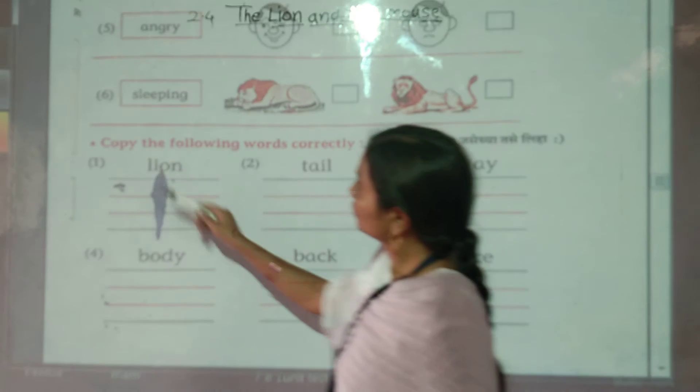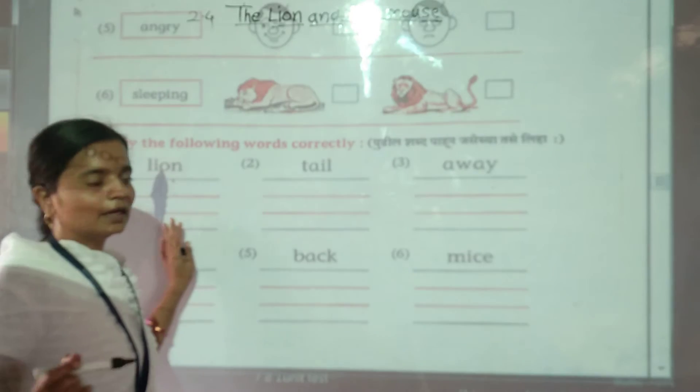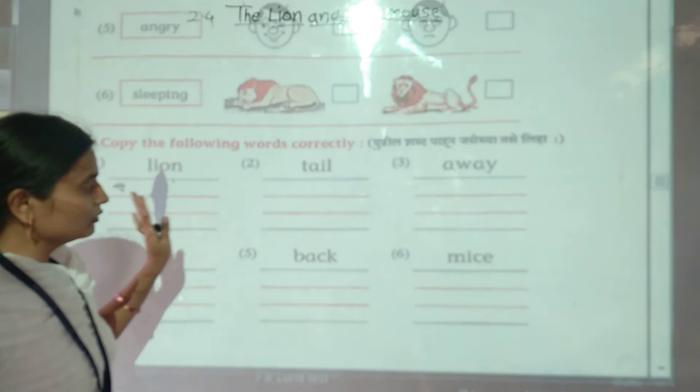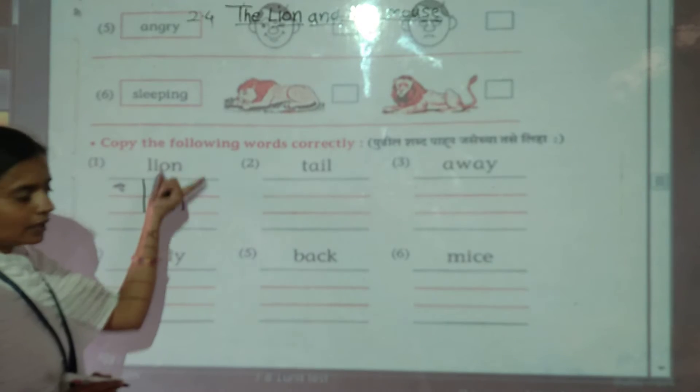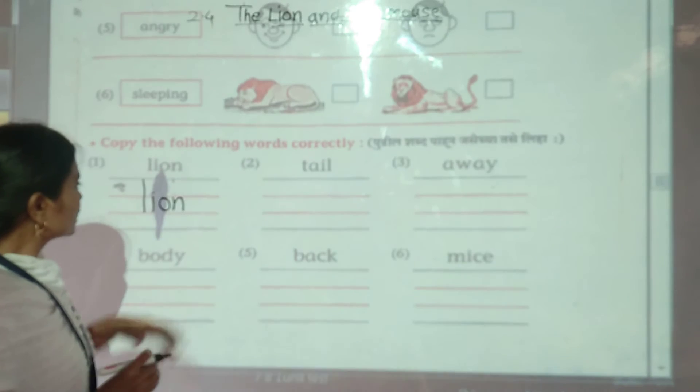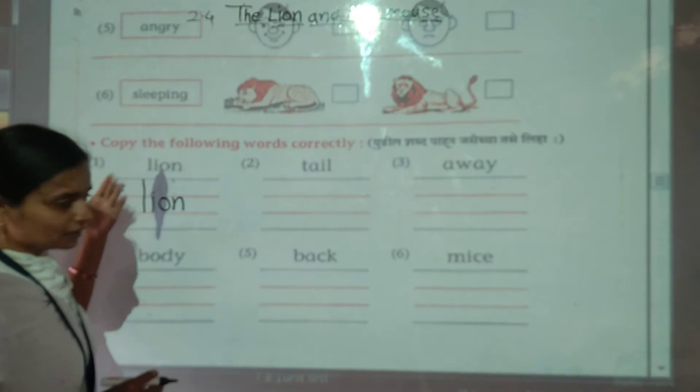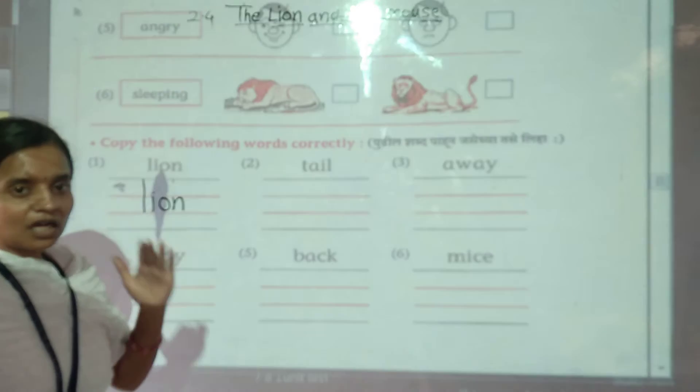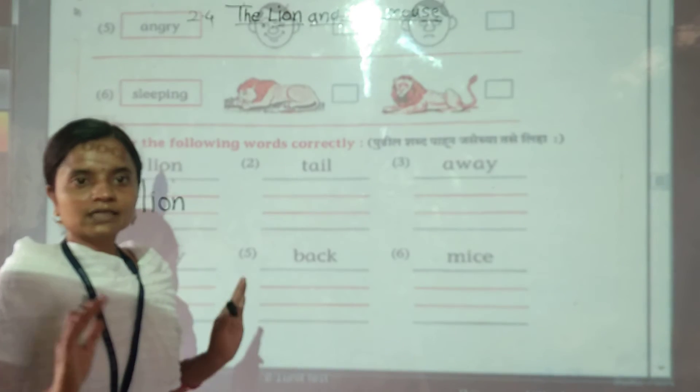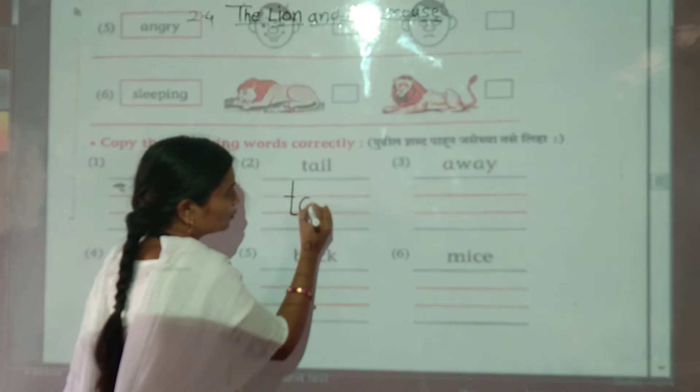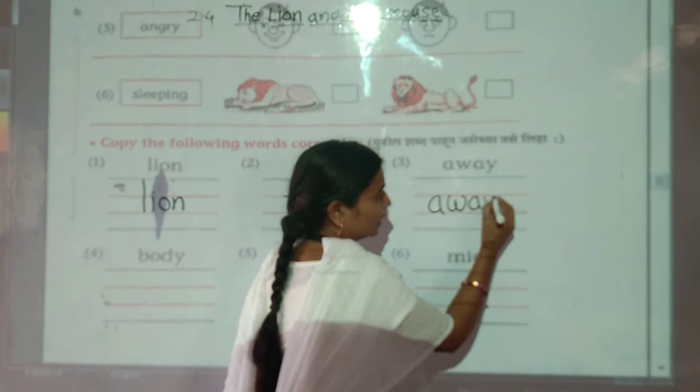Look here children, copy the following words correctly. Here is tail: T-A-I-L, tail. Away: A-W-A-Y, away.